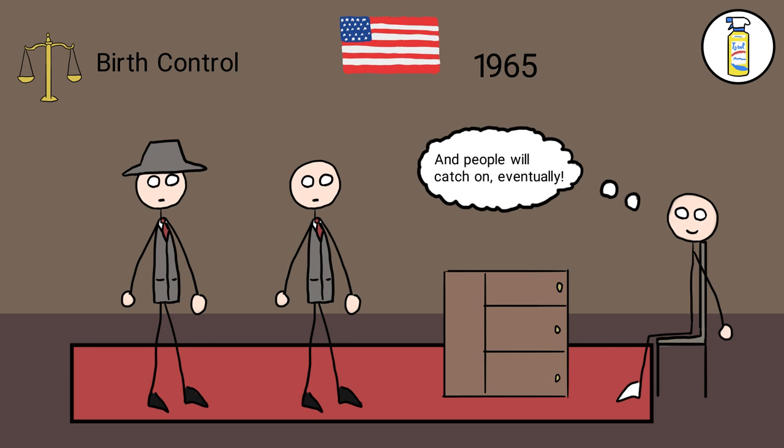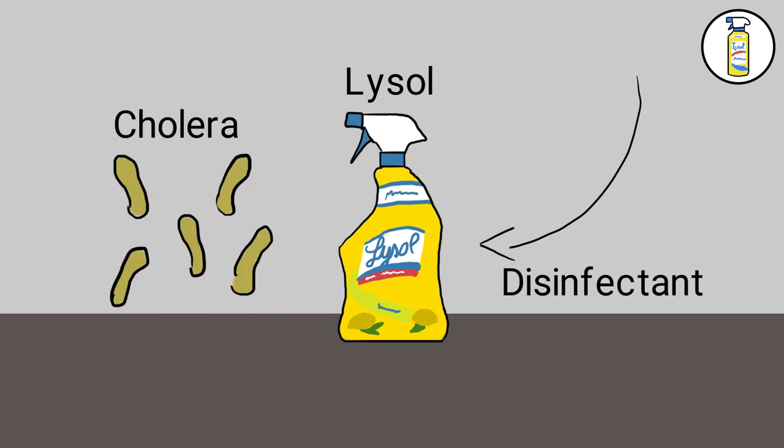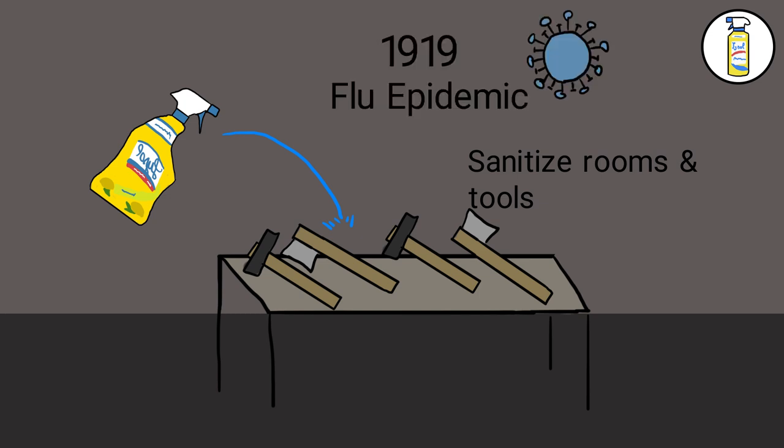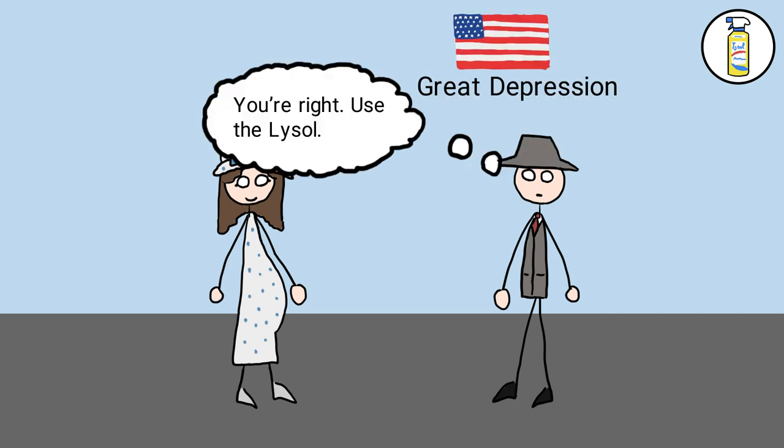Keep in mind that Lysol was initially invented as a disinfectant to help end the cholera epidemic in Germany, and it was also used to sanitize rooms and tools during the 1919 flu epidemic. Despite the health risk involved, it remained a popular birth control method during the American Great Depression.